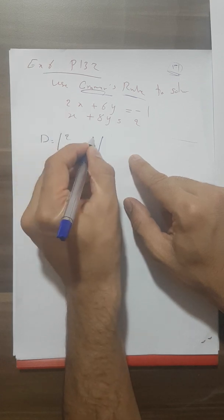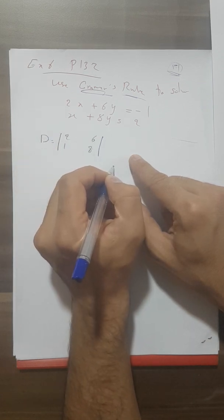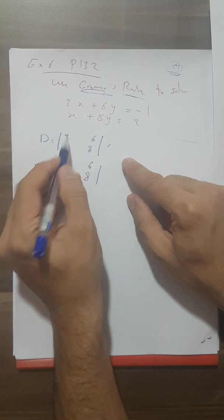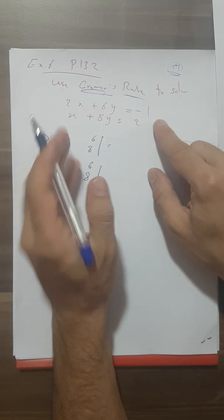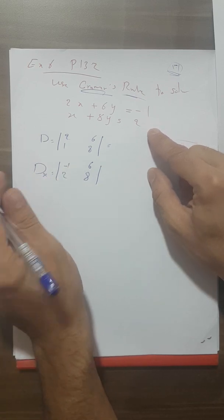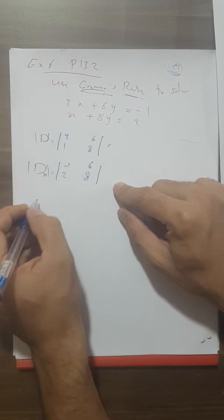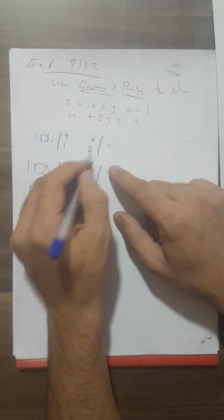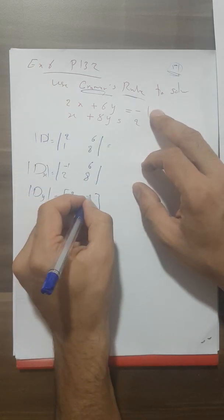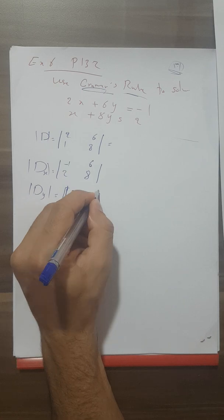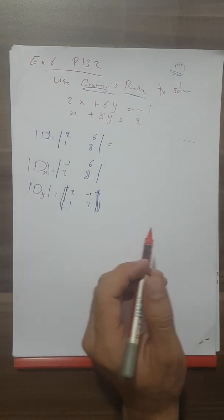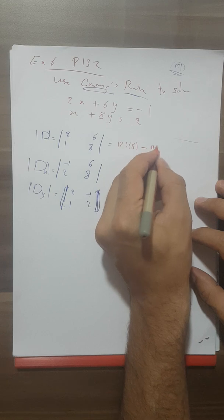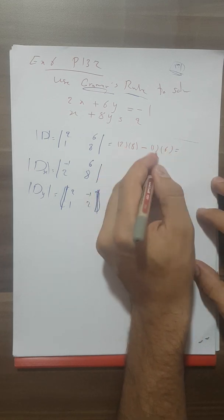We write D as the determinant of [2, 6; 1, 8]. For Dx, we replace the first column with the constants and compute the determinant. For Dy, we fix the first column [2, 1] and replace the second column with the constants. So D = 2×8 − 1×6 = 16 − 6 = 10. Dy = 2×8 − (−1)×... working out to give Dy = −20 and Dx = 5.